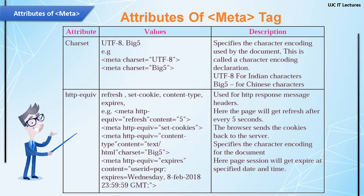Next: meta http-equiv='content-type' content='text/html' charset='big5' — this specifies the character encoding for the document. The content value 'text/html' indicates that if the browser fails to support the HTML code, the entire code can be considered as simple text.